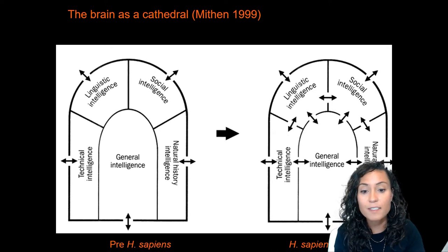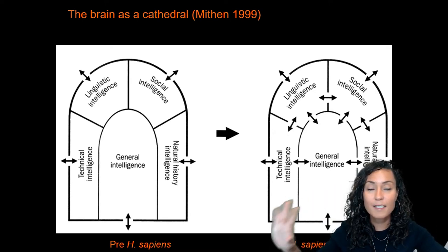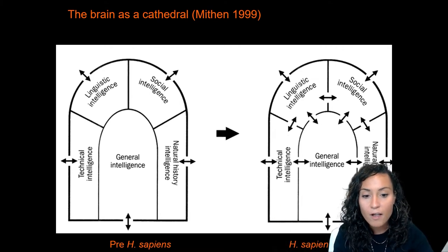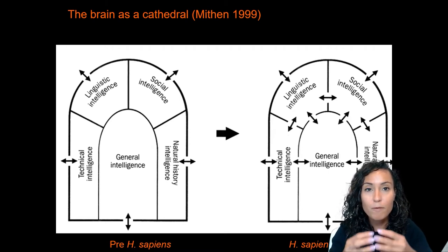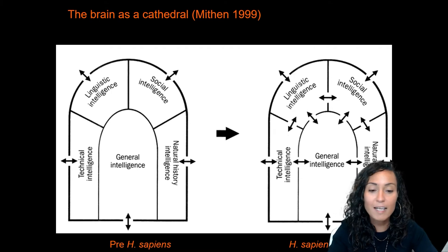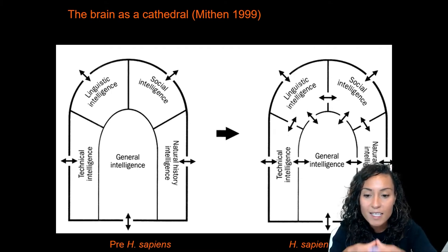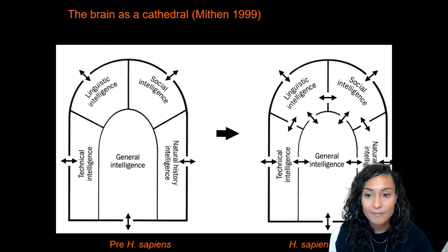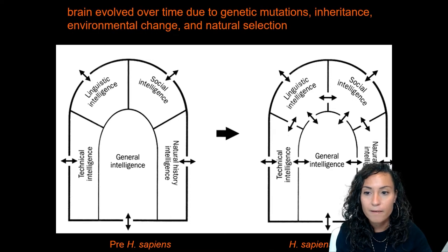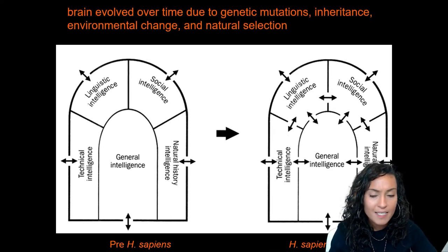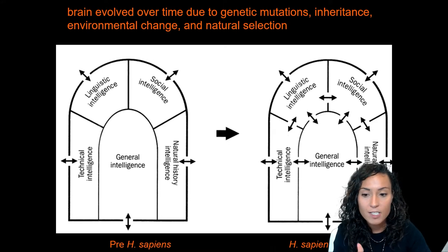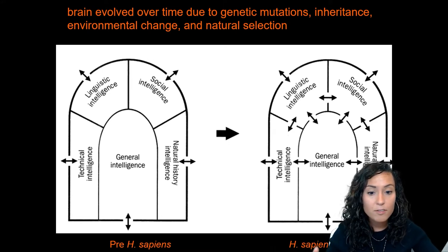These five different types of intellectual skills were fundamentally separate in our distant hominin ancestors. All knowledge about a specific domain — for instance, technical intelligence — was contained within that one part of the chapel and could not be found anywhere else in the mind. Over time, these separate intelligences became interconnected due to genetic mutations, inheritance, environmental change, and processes of natural selection.